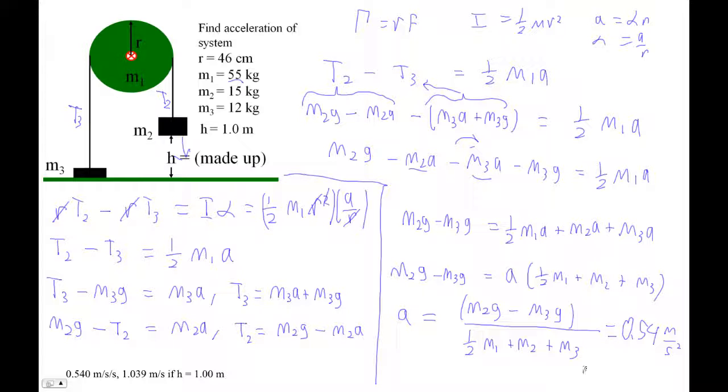And then if it fell a whole meter, I could get the final velocity. And that's going to be the square root of 2GH... or, sorry, not G. It's going to be V squared is U squared plus 2AS. So V will be the square root of 2AS. And S is 1 meter. So I'll go square root of 2 times the number I just got, 0.54, times 1. And I get 1.039.